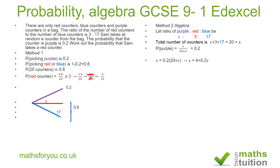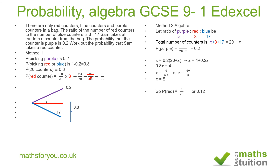Subtracting 0.2x from both sides gives 0.8x equals 4. Dividing both sides by 0.8, and multiplying numerator and denominator by 10, gives 40 over 8, so x equals 5. The ratio of purple to red to blue is now 5 to 3 to 17, giving a total of 25. So the probability of picking a red counter is 3 over 25, which is 0.12.